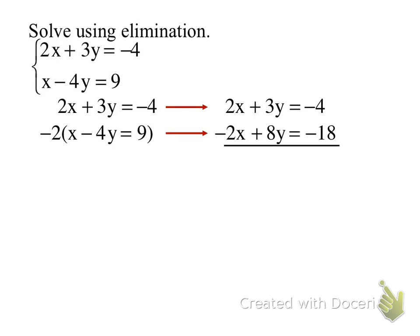So now we're eliminating our x terms. What am I left with? Zero plus 11y equals negative 22. Next up, y equals negative 2. Now what do I do with that? We substitute it in. I want to go with x minus 4y. So substituting it in for x minus 4 times the quantity of negative 2 equals 9.